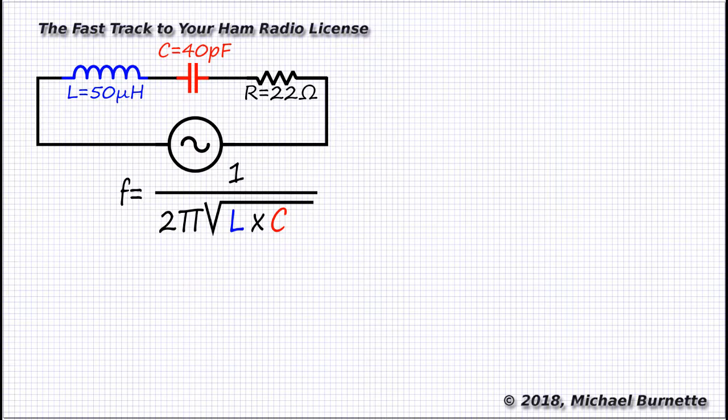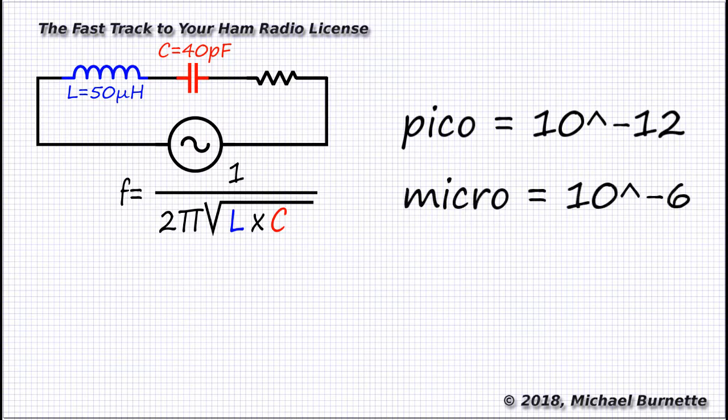We plug in our values. Now notice, the R value isn't used in these calculations. We're just going to work with L and C for the resonant frequency. Before we get going on this, a reminder, and good things to remember for the exam, pico equals 10 to the negative 12th, and micro equals 10 to the negative 6th.